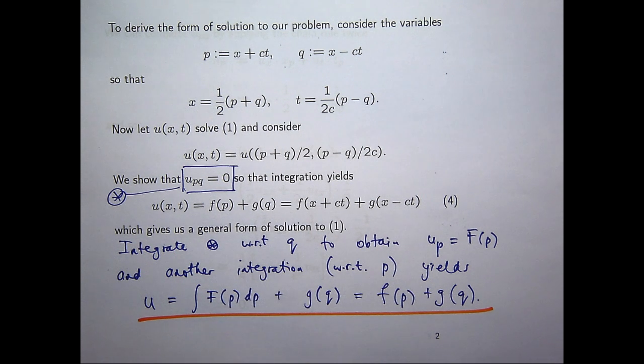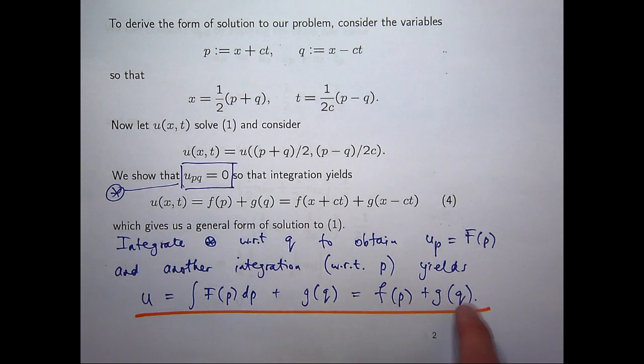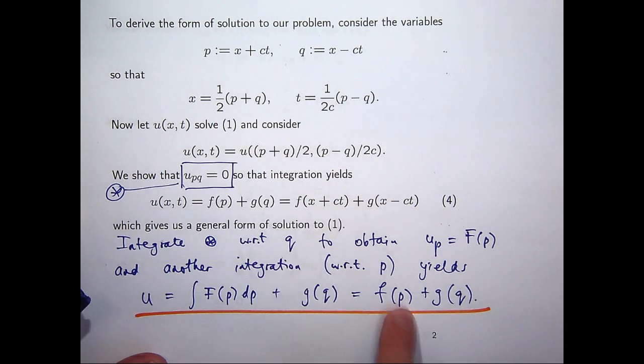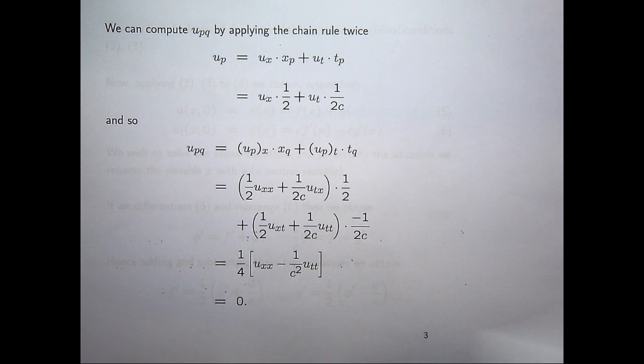Just to keep the notation simple, I've let this just be this function. So, if we can show that this starred PDE holds, then my solution is of this form and just replace p with x plus ct and q with x minus ct, then I've got some sort of general form of the solution. And in fact, what I'll do then is use the initial conditions to come up with those functions.